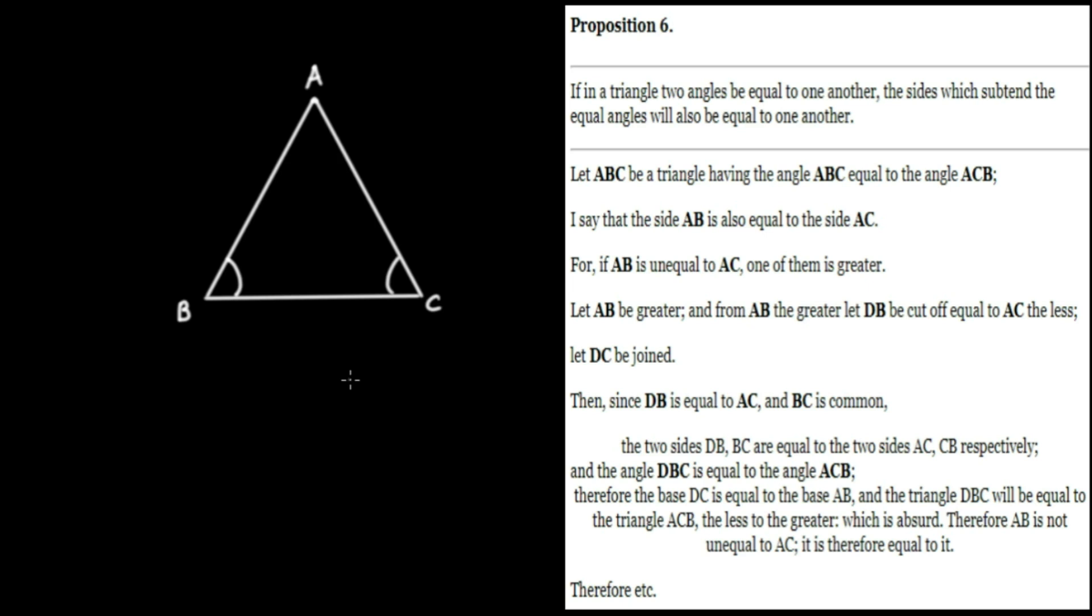Now, what does Euclid do in this proposition? He doesn't directly demonstrate it. What he does is he assumes the opposite. He assumes a negation. For if AB is unequal to AC, he's going to assume that this left-hand side is going to be unequal to AC, one of them is greater.